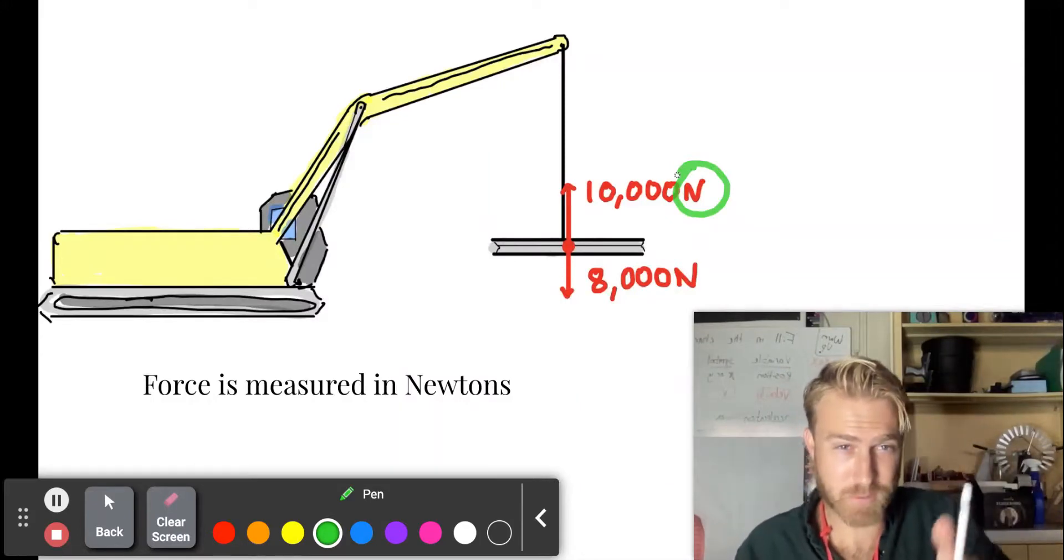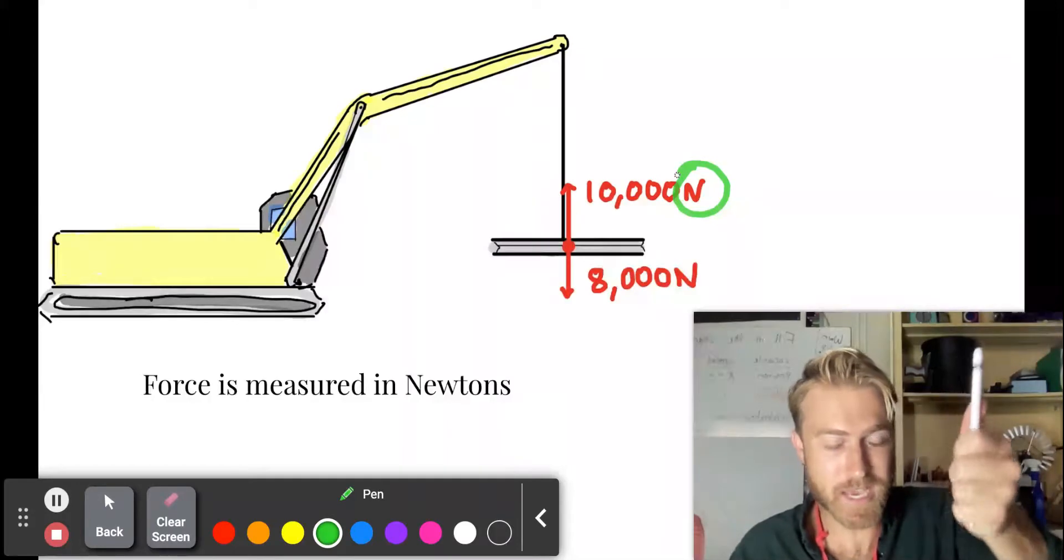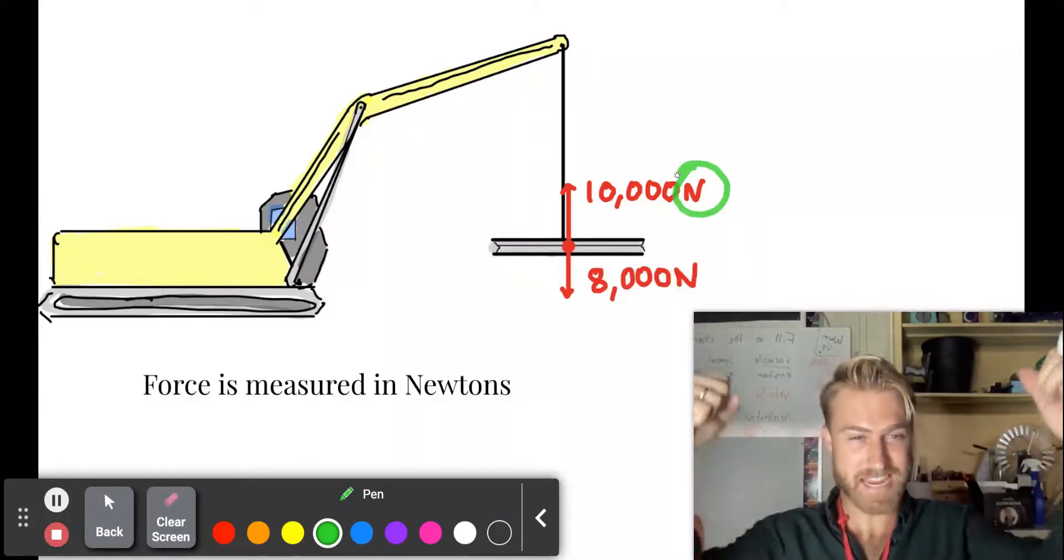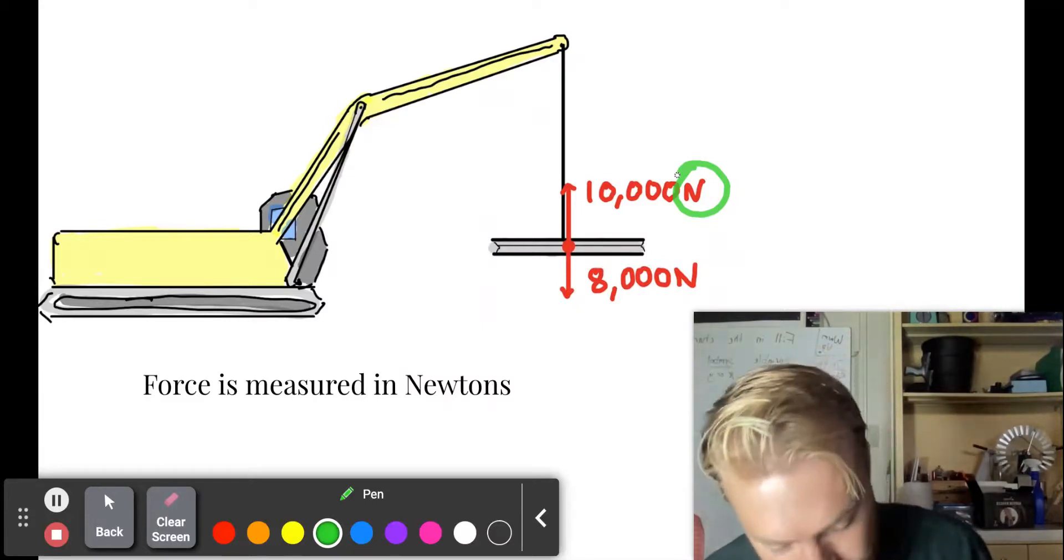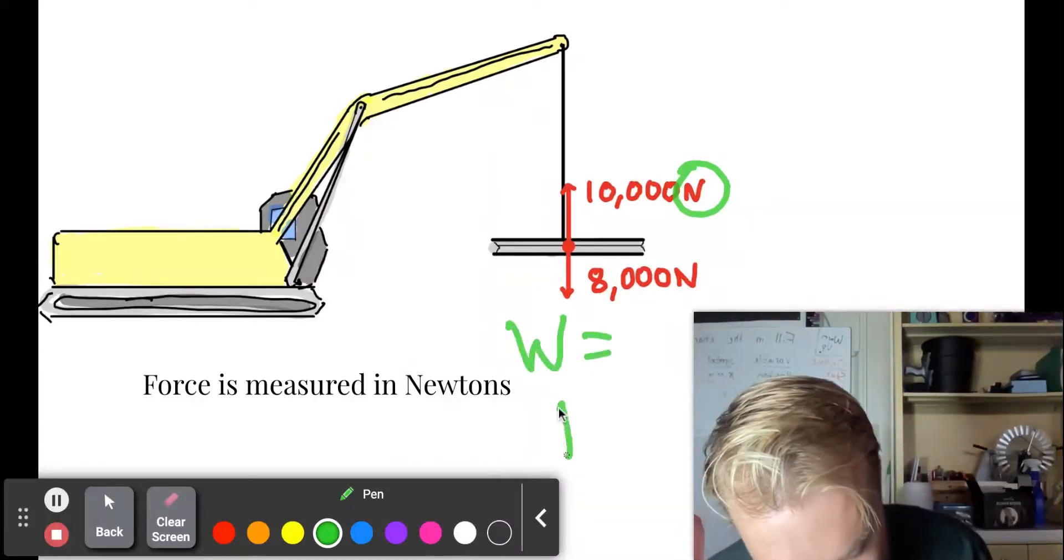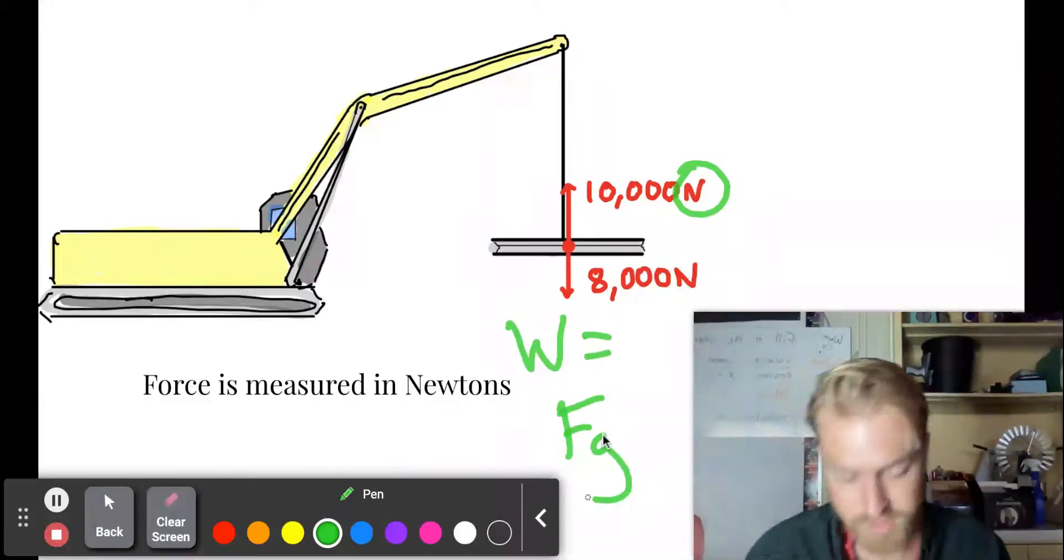So that crane is pulling on that steel beam with a force of 10,000 newtons up and gravity. The weight is pulling down on that steel beam by 8,000 newtons. That's the weight. And that's the same thing as the force due to gravity.